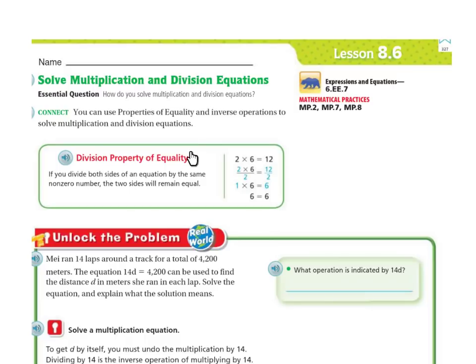The division property of equality states that if you divide both sides of an equation by the same non-zero number, the two sides will remain equal.